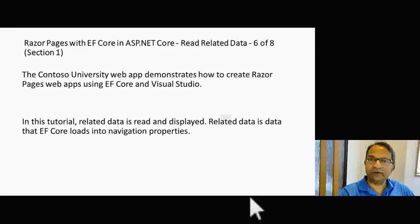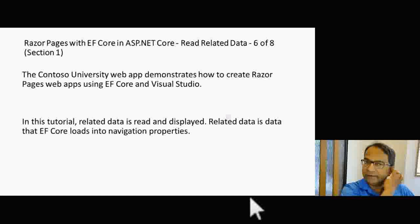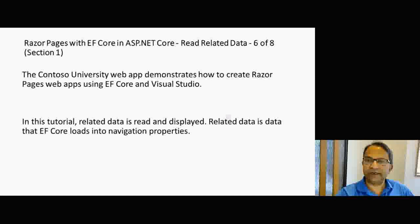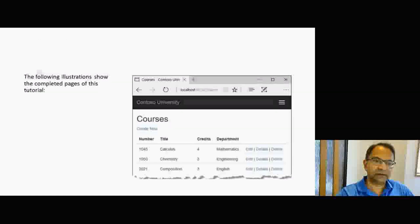Hello and welcome everyone. Today we are going to the sixth part of Razor Pages with Entity Framework Core in ASP.NET Core, and this will be about reading related data. I have broken it into two parts because of the length of this tutorial. Related data is the data that Entity Framework Core loads into navigation properties.